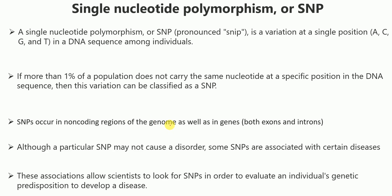SNPs occur in non-coding regions of the genome as well as coding regions of the gene — both exons and introns. Exons are coding regions and introns are non-coding regions. Although a particular SNP may not cause a disorder, some SNPs are associated with certain diseases. These associations allow scientists to look for SNPs in order to evaluate an individual's genetic predisposition to develop a disease.